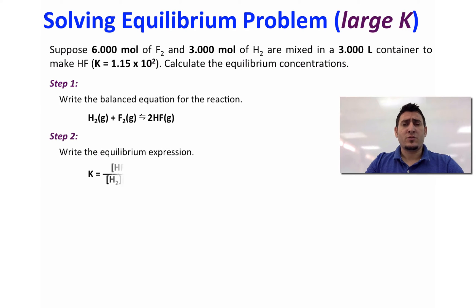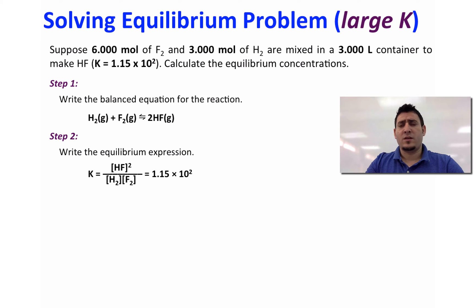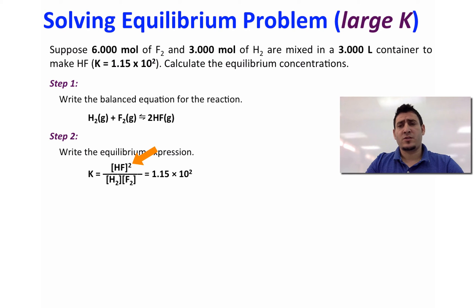In step 2, write the expression of the equilibrium constant. It is equal to the concentration of products divided by the concentration of reactants. Note that the concentration of HF has to be raised to the power 2 because the coefficient is 2.